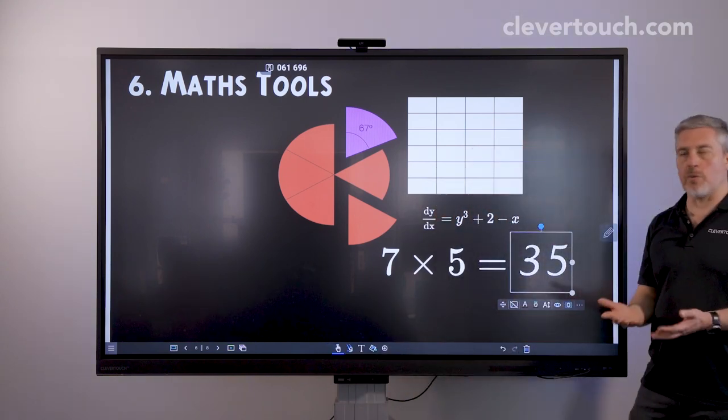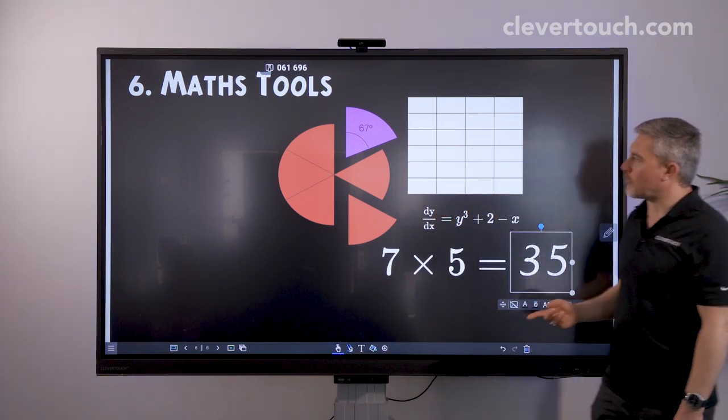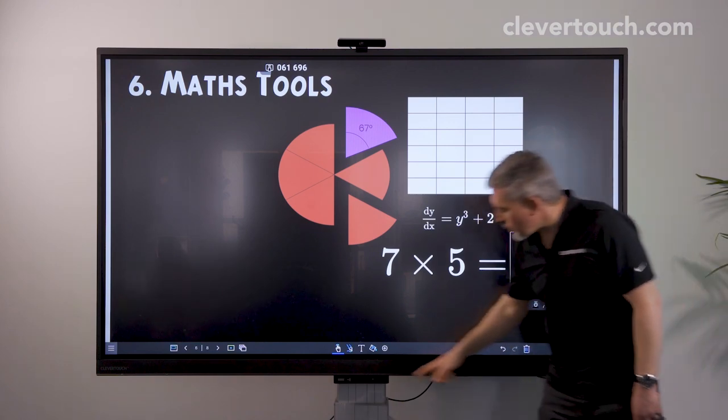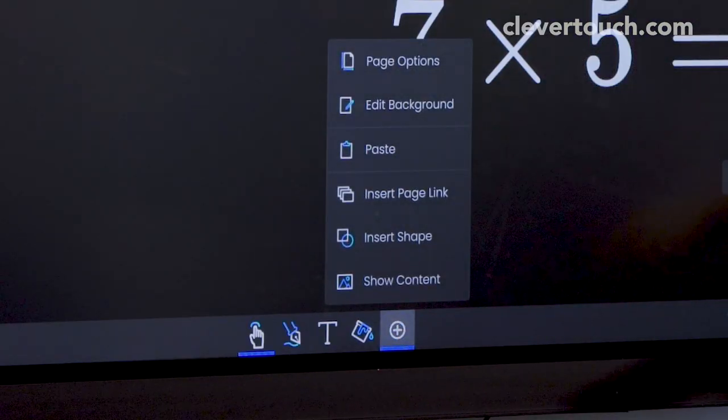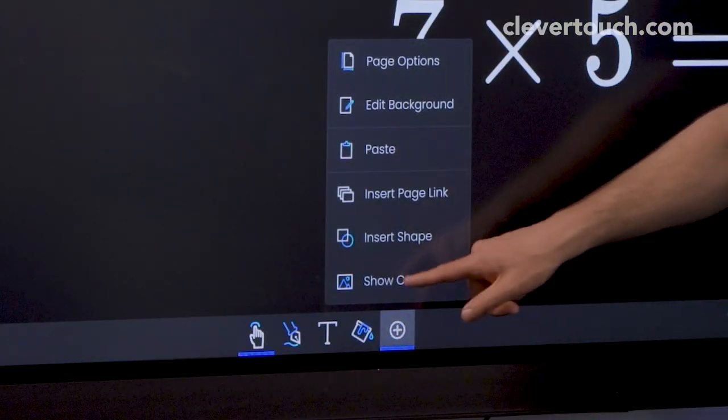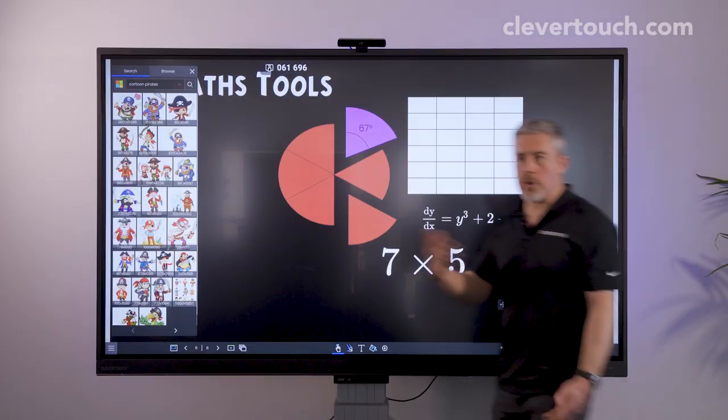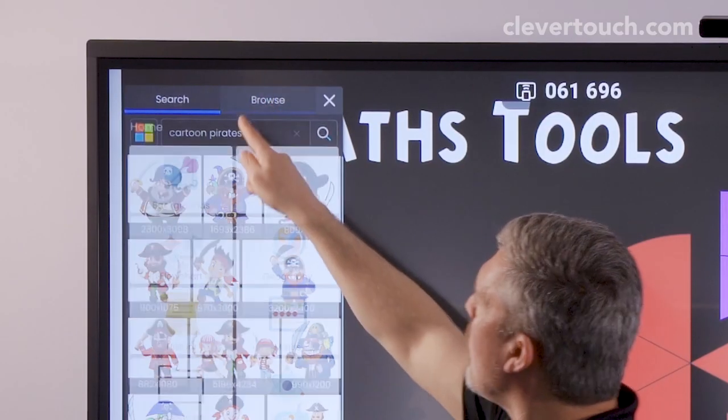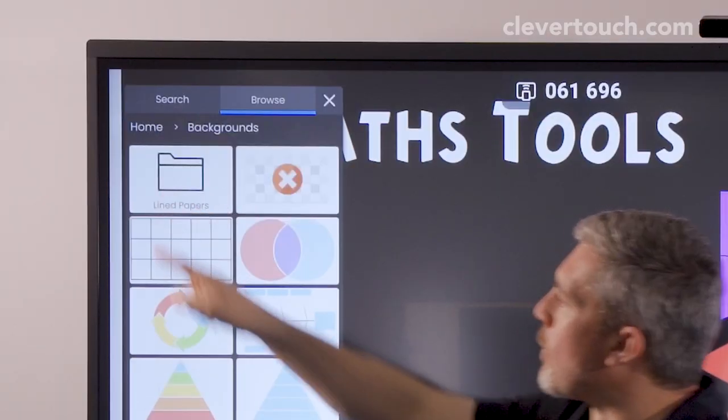But the content area is where we'll find most of the really cool Maths resources as well. So we're going to go to the plus button here and the show content area and we're going to go to the local content of the board itself. First of all we have backgrounds.